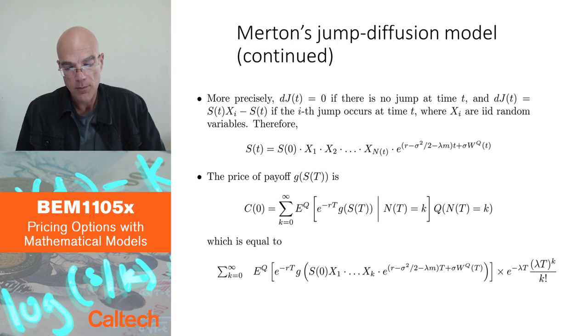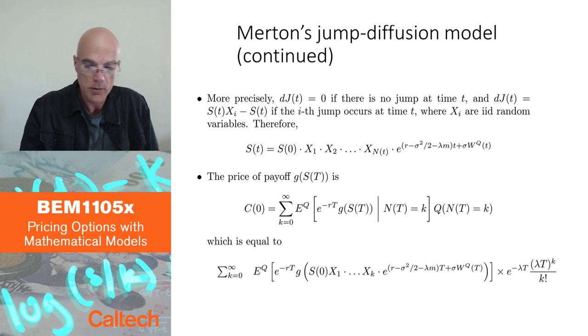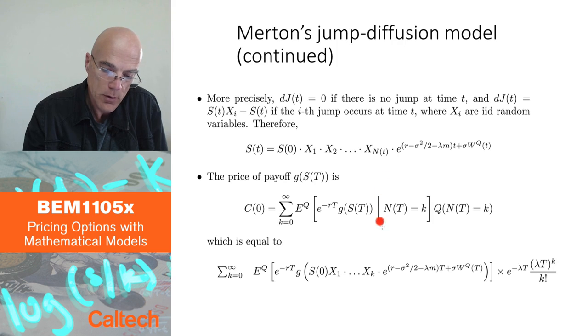But if you want to follow this, so what the standard trick is to condition on the number of jumps that happened up to maturity. So that can be k, where k can be anything from 0 to infinity. And then you add, overall, those possibilities.